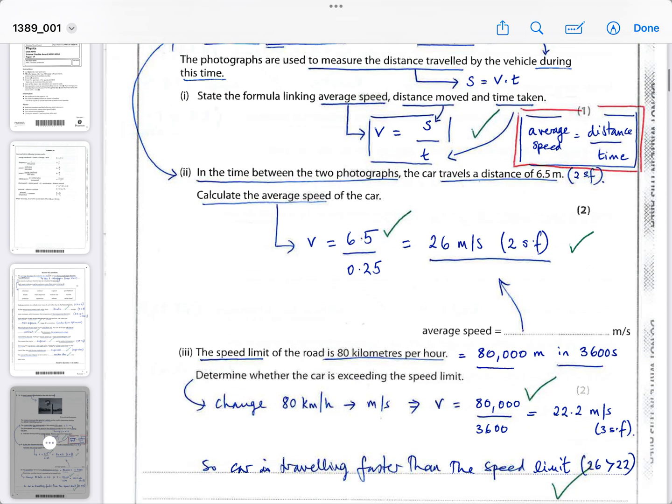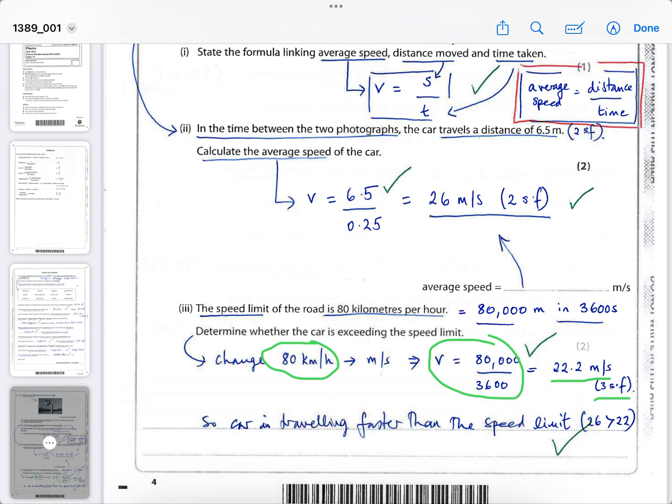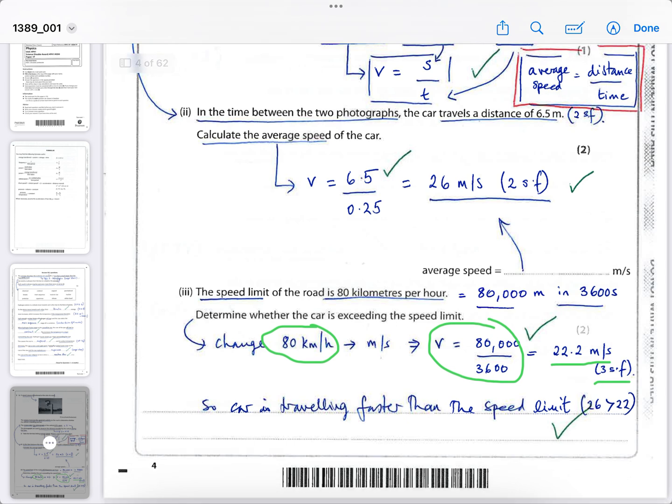It then says the speed limit on the road is 80 kilometers per hour. Well, of course we just worked it out in meters per second, so they want to see if you can change the units to determine whether the car is exceeding the speed limit. What I did was I changed 80 kilometers into 80,000 meters in 3,600 seconds, and I've therefore divided 80,000 meters by 3,600 seconds to get the answer from kilometers per hour into meters per second. Because obviously 80,000 meters in 3,600 seconds would convert it into meters per second. I've done it to three significant figures first, and so that's about 22 meters per second. I've just explained to answer the question that the car is traveling faster than the speed limit because it was going at 26 meters per second and the speed limit was about 22 meters per second, so it's definitely exceeding the speed limit.